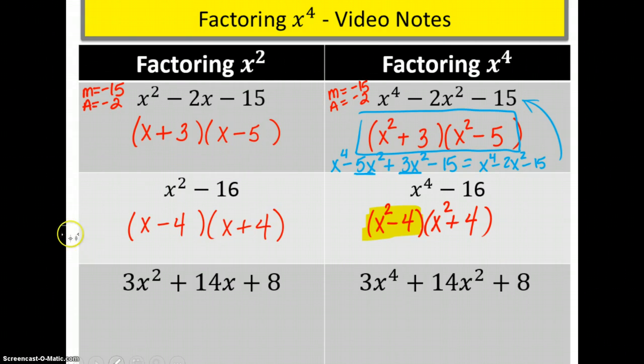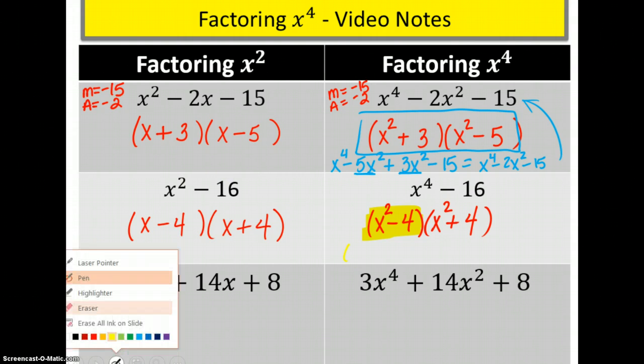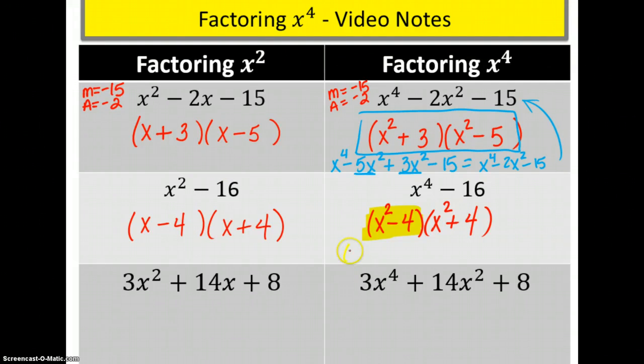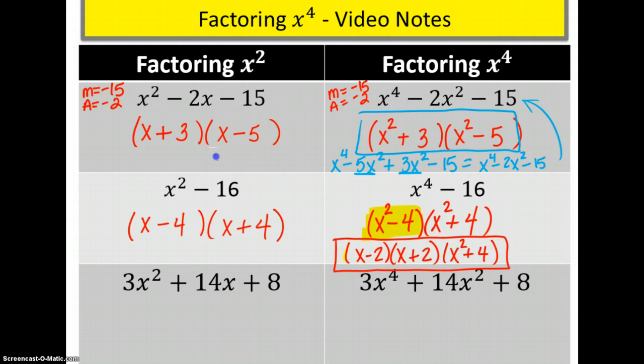We have another difference of two squares. So we're going to go ahead and factor that. x squared minus 4, we all know, factors into x plus 2, x minus 2. Can't write in yellow, can't see it. There we go. x minus 2, x plus 2. That's x squared minus 4. And then we still have our x squared plus 4, which does not factor any further. So here is our answer now.